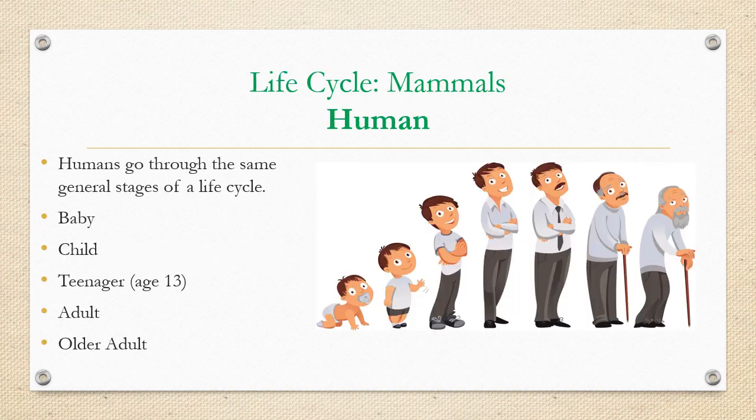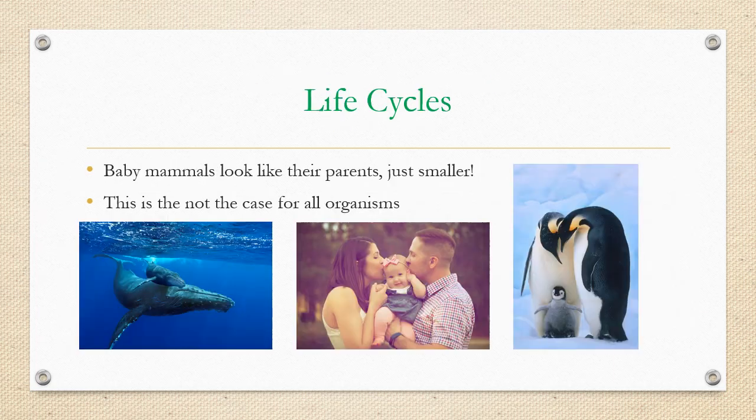Here's our human life cycle. If you think about it, we're born as a baby and we grow to be a child, a teenager, an adult, an older adult, and then we die. So we go through general stages. Humans and mammals look just like their parents, just smaller. We're going through gradual changes, but that's not always the case.